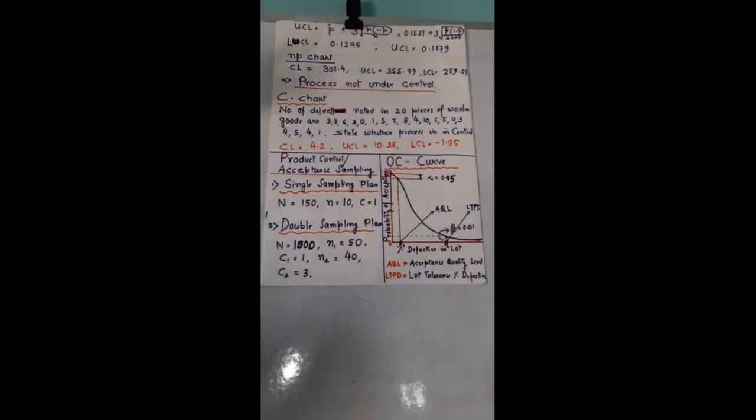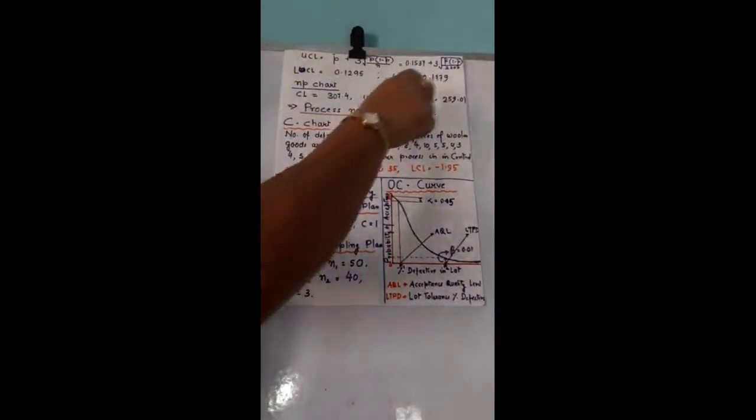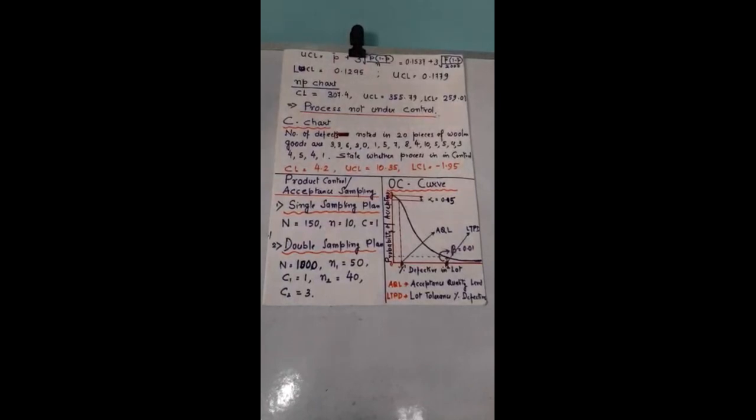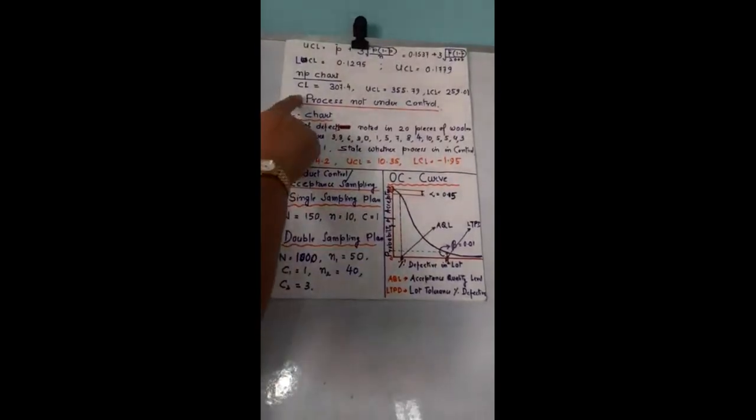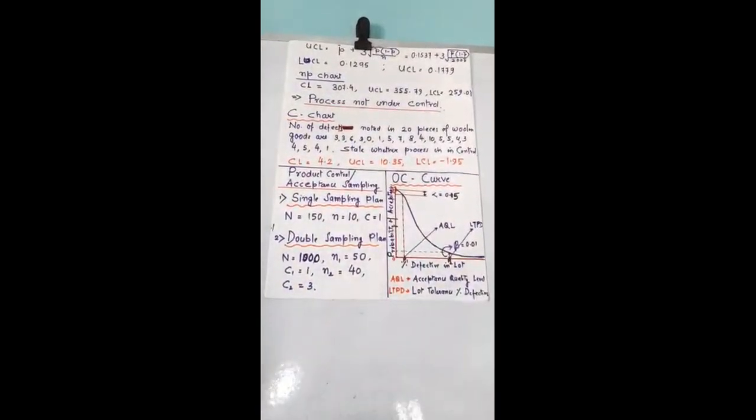UCL and LCL — you know the formula. UCL is p bar plus 3 into square root of p bar times (1 minus p bar) divided by n, whole square root. If you put all these values, UCL comes to be 0.1779 and LCL comes to be 0.1295. Next, we have to plot the charts. P bar, UCL, and LCL are given. You have to choose the scale in such a way that all UCL values, LCL values, and all p bar values can be plotted and then we can see whether the process is under control or not. If you plot it — that is your home task — you will find that the process is not under control.